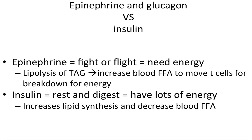Epinephrine and glucagon versus insulin: epinephrine is adrenaline — when you have a fight-or-flight response, you need energy to run away. So epinephrine triggers lipolysis of TAGs, increasing blood free fatty acids that move to cells for energy breakdown. Insulin is rest-and-digest mode — we have lots of energy, so we increase lipid synthesis and store it in adipose tissue, resulting in decreased blood free fatty acids.